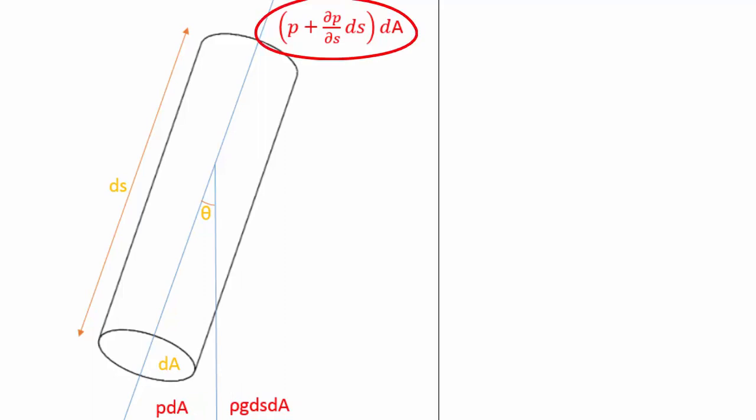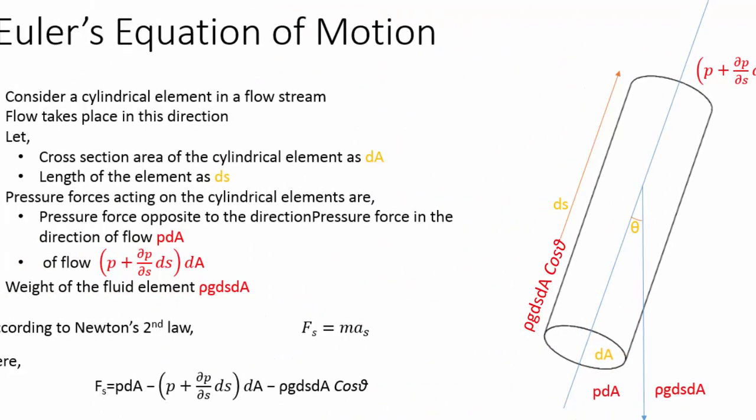As this pressure force and the s-directional component of the force due to gravity are opposite to the direction of flow, they should be subtracted from this force to get the net force.